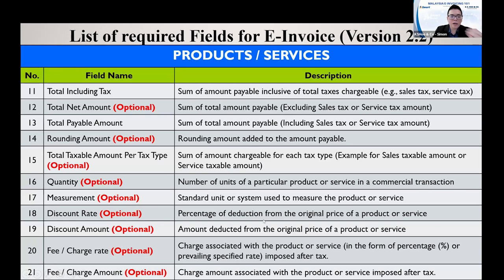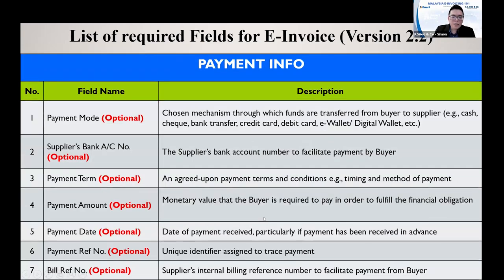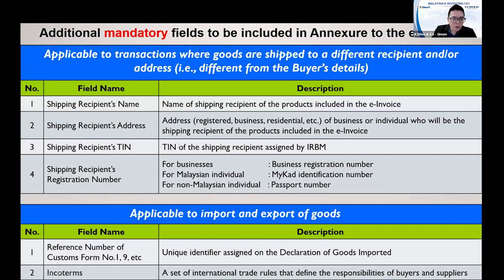Payable amount and quantity are optional fields. Under payment information, this section lets you state how your client can make payment to you — for example, your bank account number. It is optional, but it is convenient for your customers to have this reference. You can choose whether to fill in this payment information or leave it blank.